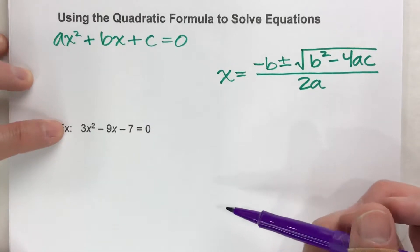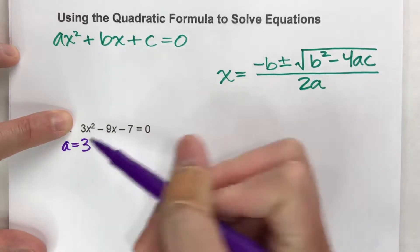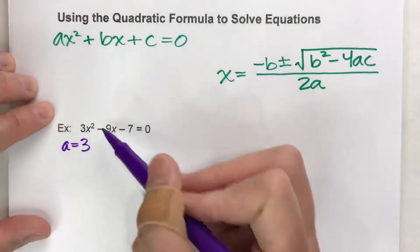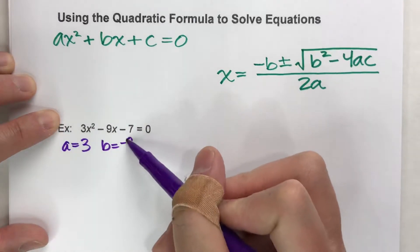Now, next step. The number next to x squared is my a. In this case, a is going to be 3, because 3 is next to x squared. The number next to x is my b. And notice in this case, it's negative 9x, so b is negative 9.